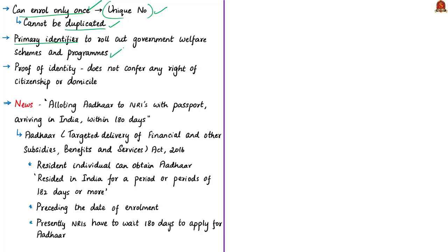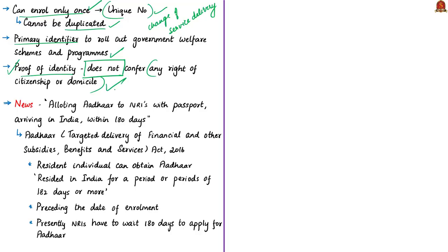Aadhaar may be used as a basis or primary identifier to roll out several government welfare schemes and programs, ensuring effective service delivery and promoting transparency and good governance. It is the only program of its kind globally — ultra-modern digital and online ID provided free of cost at such a large scale. It has the potential to change the way service delivery functions in our country. Importantly, Aadhaar does not have any intelligence — it does not profile or describe people based on caste, religion, income, health, or geography. It is just a proof of identity but does not confer any right of citizenship or domicile.